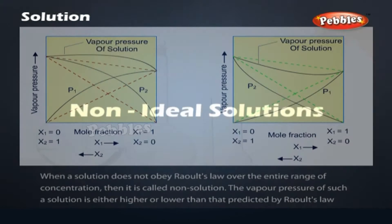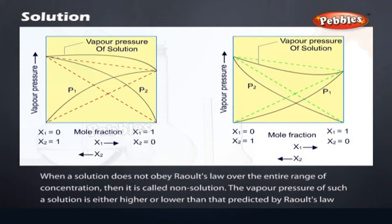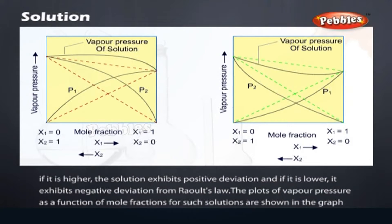Non-ideal solutions: When a solution does not obey Raoult's law over the entire range of concentration, then it is called a non-ideal solution. The vapor pressure of such a solution is either higher or lower than that predicted by Raoult's law. If it is higher, the solution exhibits positive deviation, and if it is lower, it exhibits negative deviation from Raoult's law. The plots of vapor pressure as a function of mole fractions for such solutions are shown in the graph.